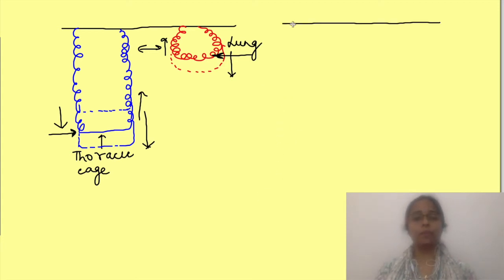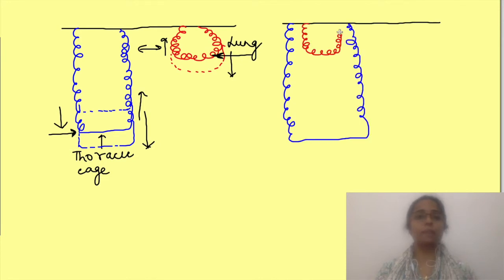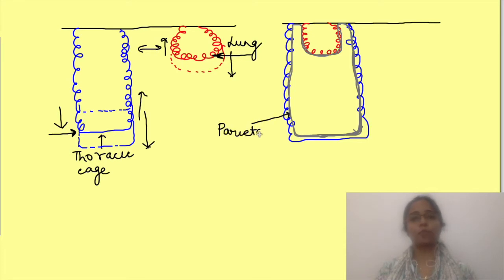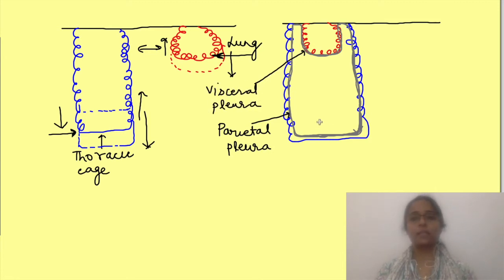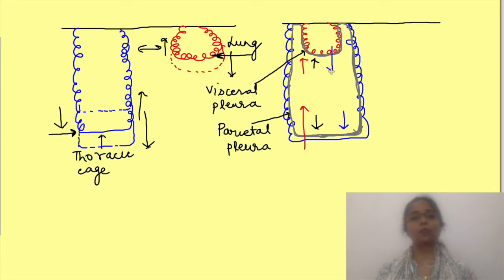In an intact human body, the lungs are housed inside the thoracic cavity, separated by pleural membranes. The parietal pleura is attached to the thoracic cage while the visceral pleura is attached to the lungs. Since the natural tendency of the thoracic cage is to move outwards and that of the lungs is to move inwards, these opposite forces act on each other — the lungs' natural tendency to move inwards pulls the thoracic cage inwards, while the thoracic cage's natural tendency pulls the lungs outwards.